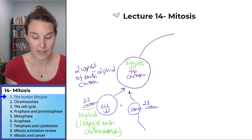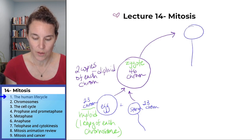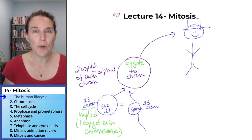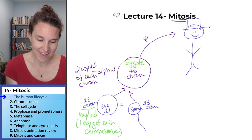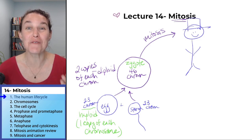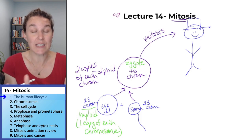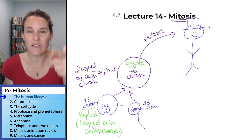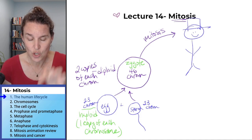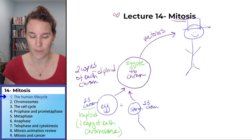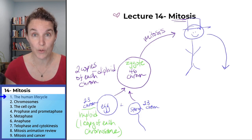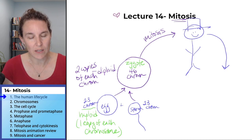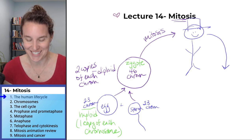That diploid cell somehow has to turn into the grown-up you. The process is mitosis — cell division that results in identical daughter cells. That zygote went through mitosis and divided roughly 100 trillion times to produce you as you are now. The adult you has gonads — ovaries or testes — and in those, a different kind of cell division called meiosis takes place.